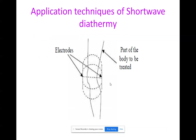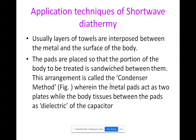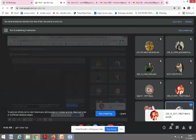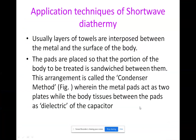This is the diagram of the pad used for the diathermy treatment. You place the electrode above the part of the body where treatment is required. Layers of towels are interposed between the metal and the surface of the body. The pads are placed so that the portion of the body to be treated is sandwiched between them — this arrangement is called the condenser method.